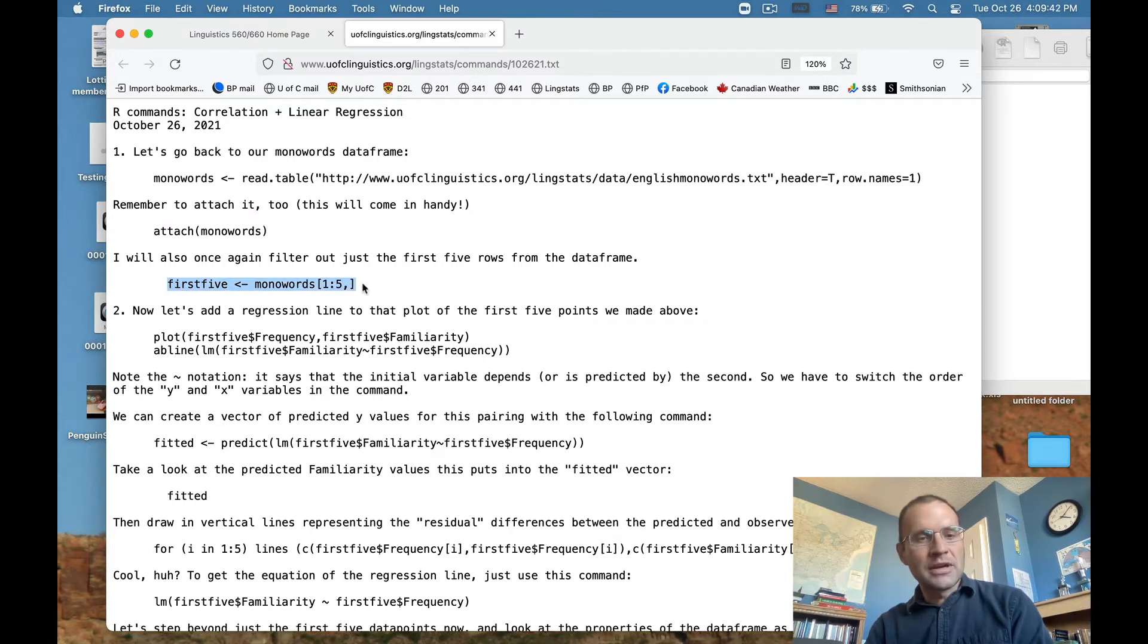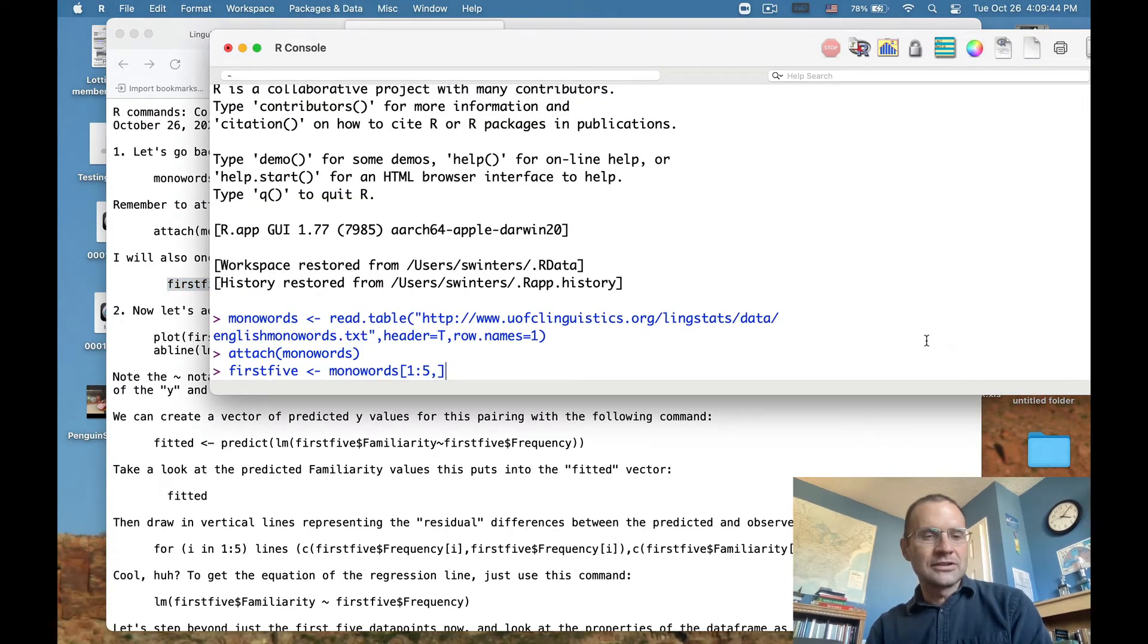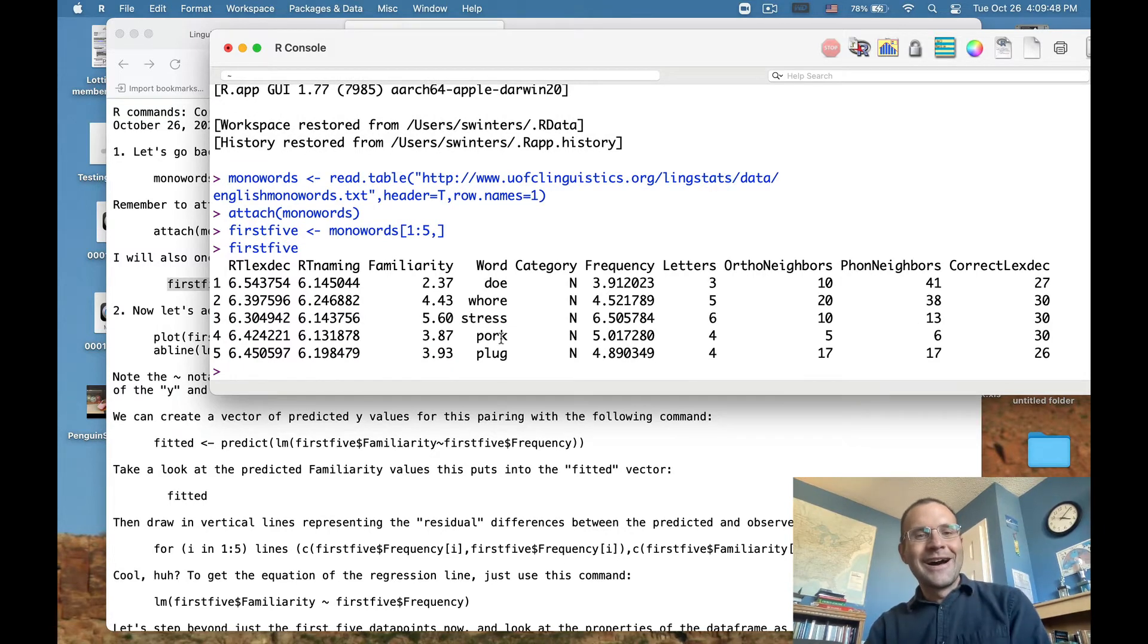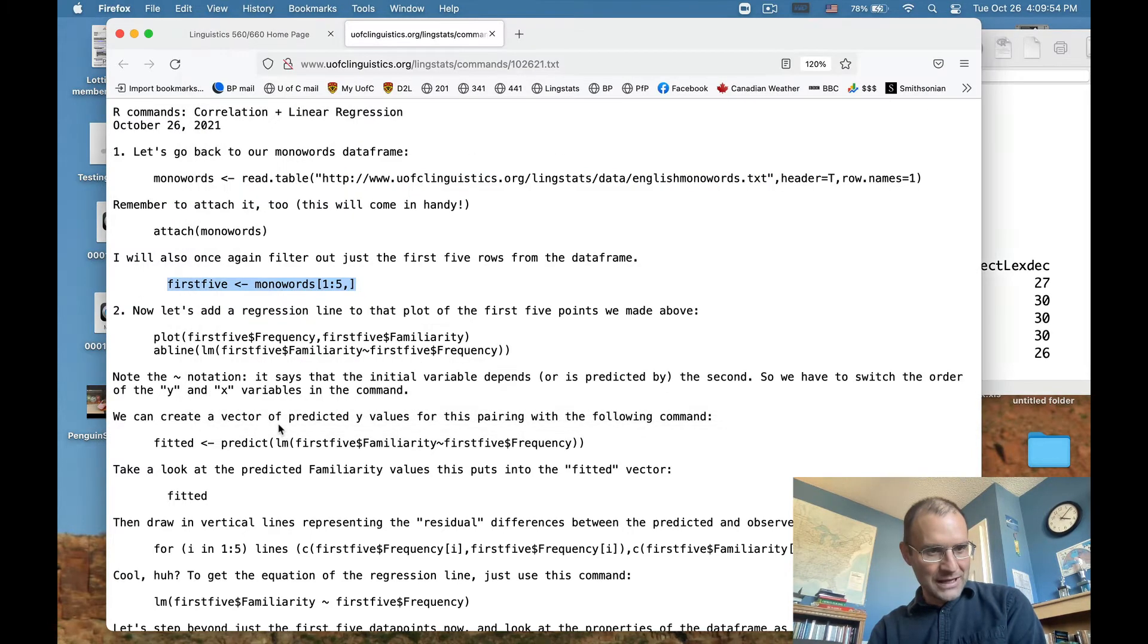There's not too many to work through here, but what we're going to do is start off with this monomorphemic monosyllabic words database that we played around with last time. I'll just start by loading that up into R and attach the variable labels for that data frame so we can use those easily. And then lastly, as part of this preamble, I'm going to once again extract just the first five words out of this database. You may remember these - they varied a little bit in familiarity and frequency, and that's mostly what we're going to look at for the time being.